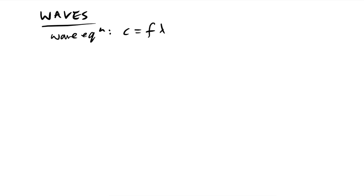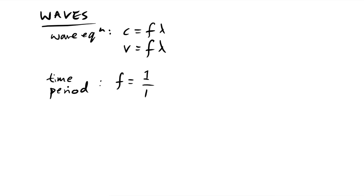For waves, the wave equation is simply c = fλ, though I prefer v = fλ because v reminds us it's a speed. The time period of a wave is the reciprocal of frequency: T = 1/f, so f = 1/T. Whenever you're given a time period you'll need to convert to frequency, or you can substitute directly into the wave equation to get v = λ/T.